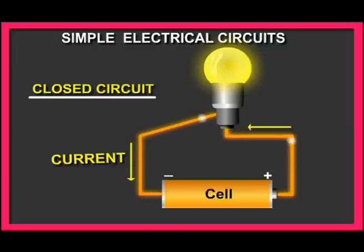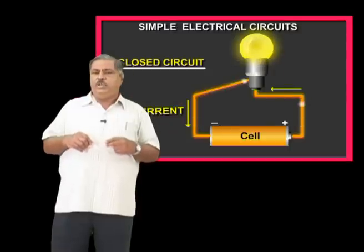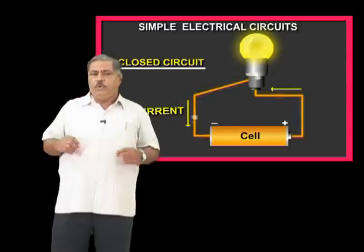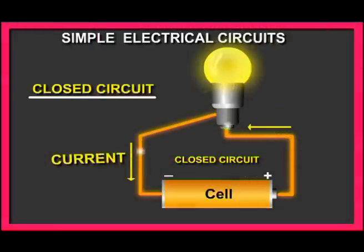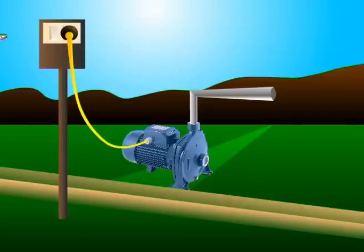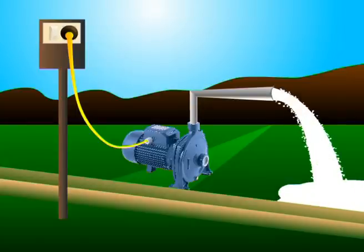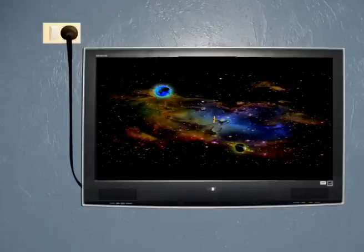For example, the current flows in the cell. If you have a switch or a starter switch, the pump will turn on. That's why we have a TV — because it is a closed circuit. We also have a closed circuit, for example.